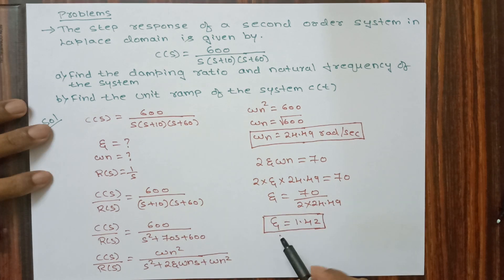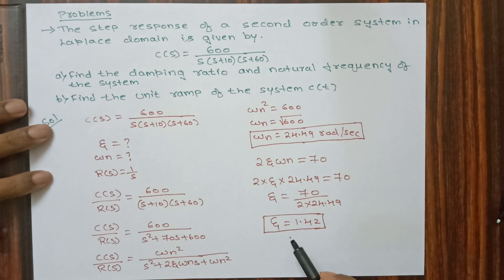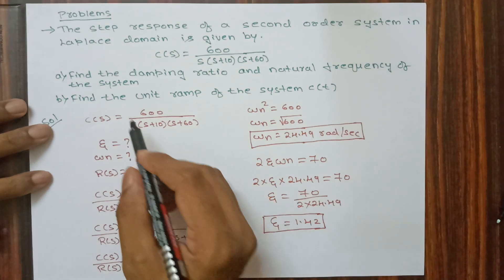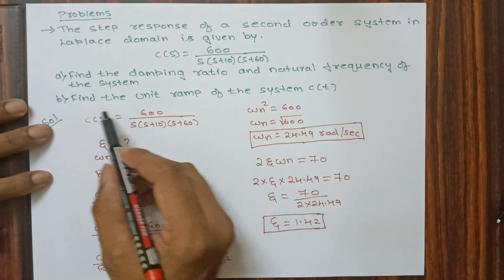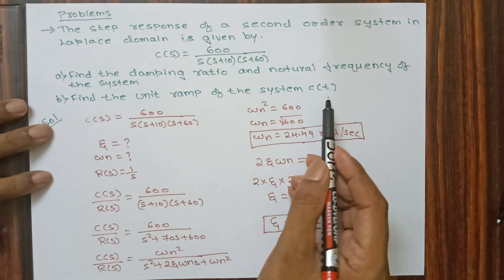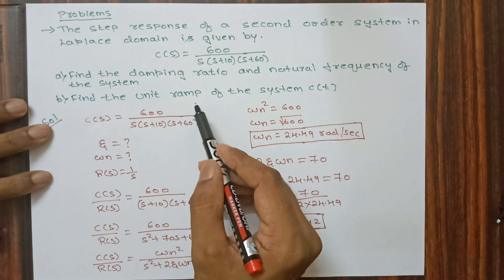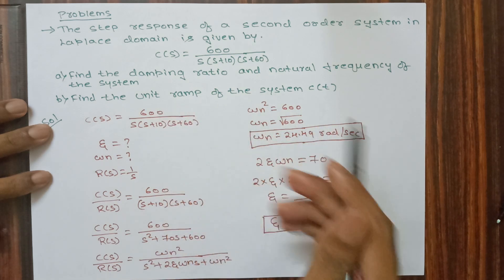Since zeta = 1.42, which is greater than 1, the system is an overdamped system. Next we will find the output equation C(t) for a unit ramp input.